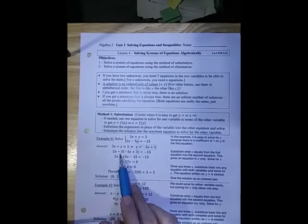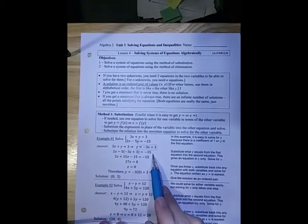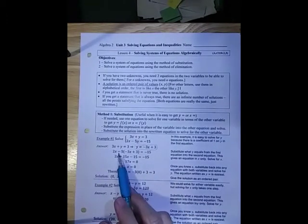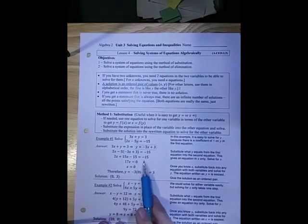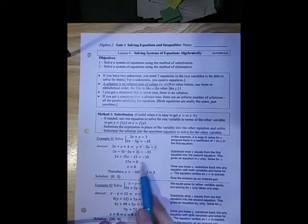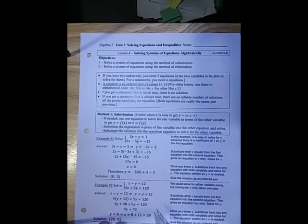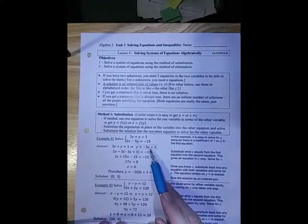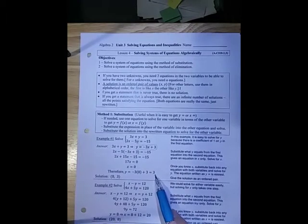So now I have 2x minus 5. I want to write instead of that y, I put minus 3x plus 3 equals minus 15. And now you're going to solve that one variable equation. You would distribute the minus 5 to those two parts, combine the like terms, take the separate numbers to the other side, and then divide by your 17 to get x equals 0. Since you know x equals 0 and y is minus 3x plus 3, if you put 0 in there, you get out of 3. The solution is (0, 3).